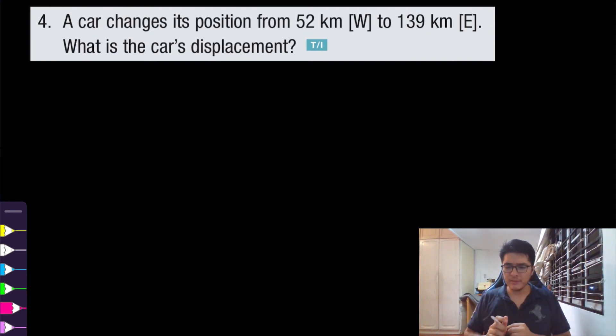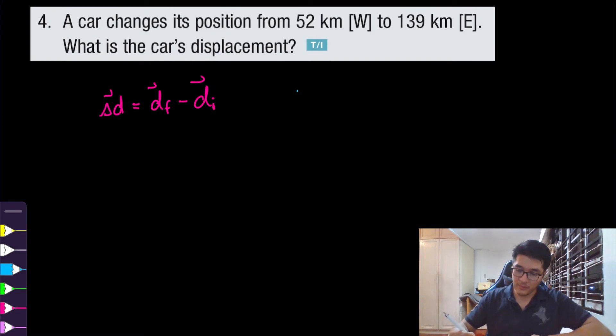Okay, we still have one more question, so let's get started with number four. Make sure you hit a like to show your support with this video. A car changes its position from 52 kilometers west to 139 kilometers east. What is the car's displacement? As we saw before, the formula for displacement is the final position minus the initial position. From the question, now we need to identify what was the initial position and which is the final position. A car changes its position from—so that's the starting point—the final point, that would be the ending point. Oh sorry, it was east.